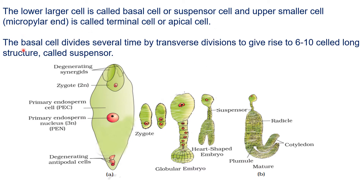The lower larger cell is called the basal cell and the upper smaller cell situated at the micropylar end is called the terminal cell or apical cell. The basal cell divides several times by transverse divisions to give rise to a 6 to 10 celled long structure called the suspensor, as shown in the diagram.